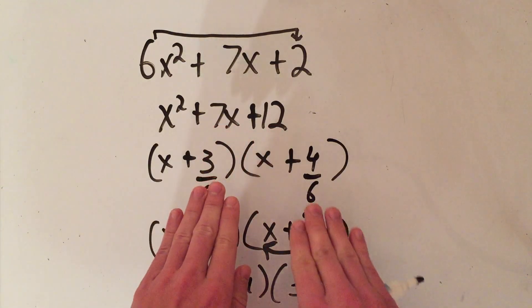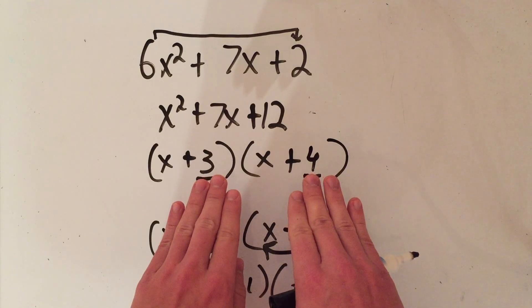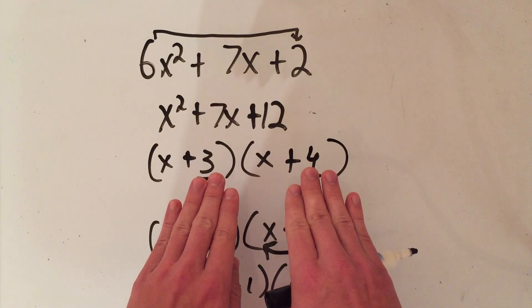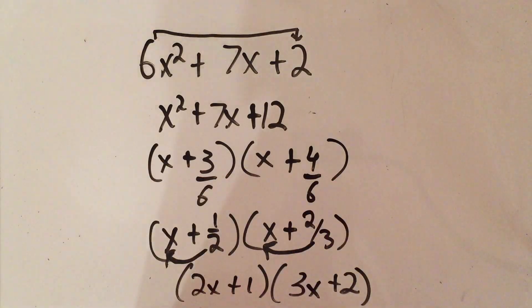It would factor into (x + 3)(x + 4). And divide the constants by that leading coefficient, in this case 6. Simplify: 3 over 6 is 1/2, 4 over 6 is 2/3. And then you take the number in the denominator and move it up in front of the x. That is how you factor with the slide and divide method.